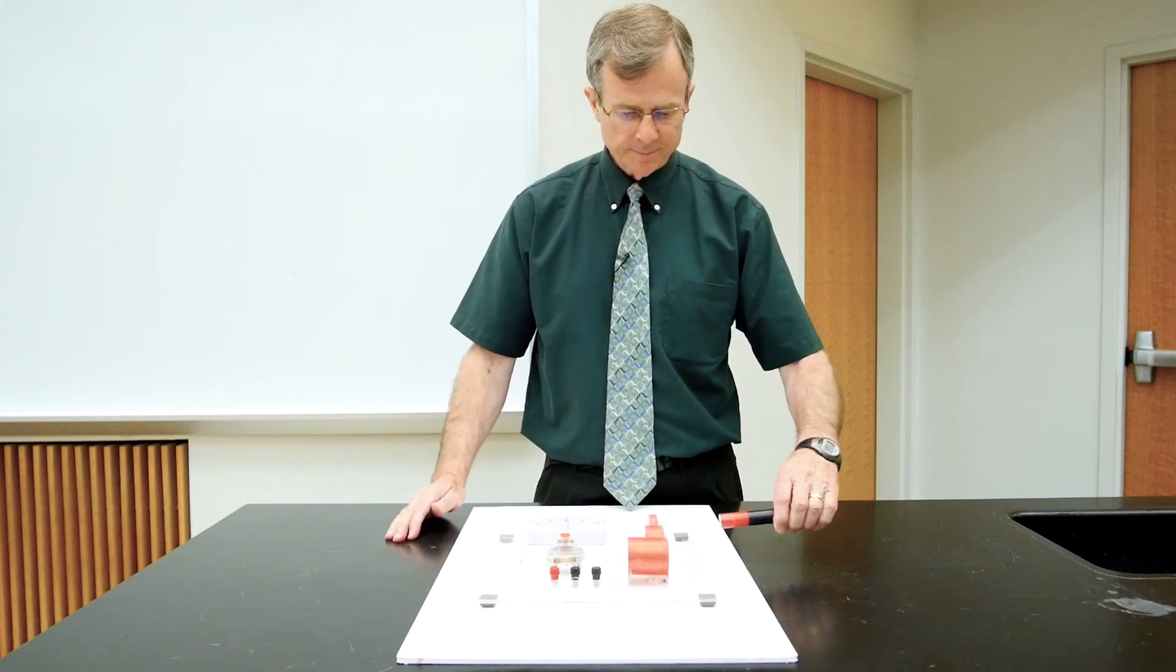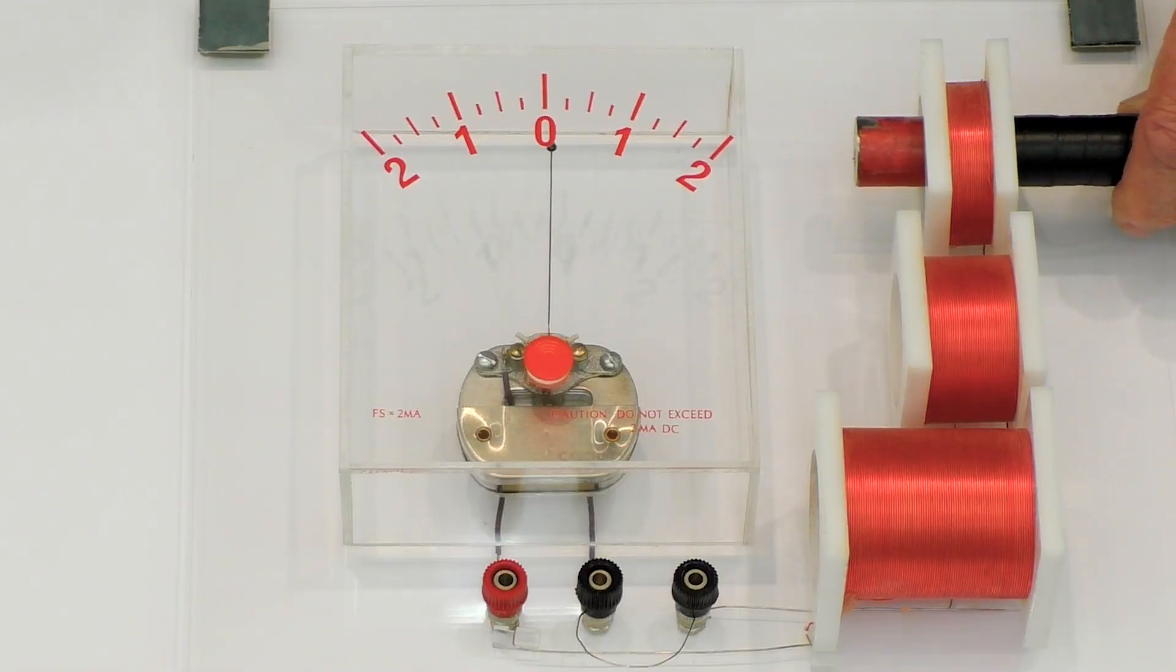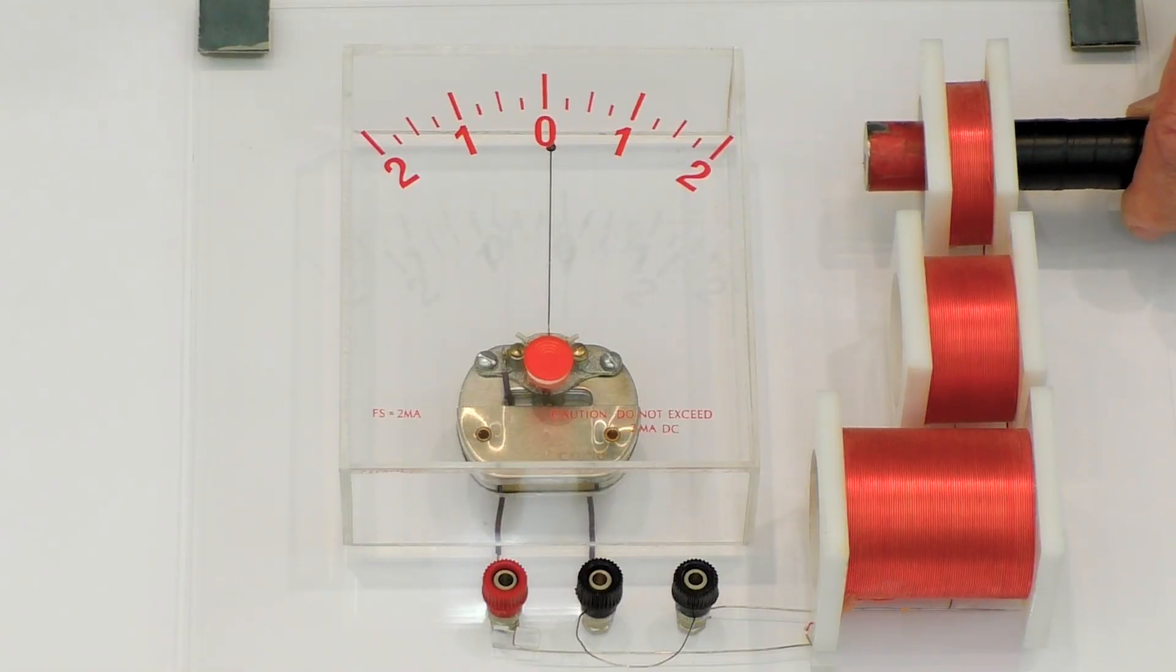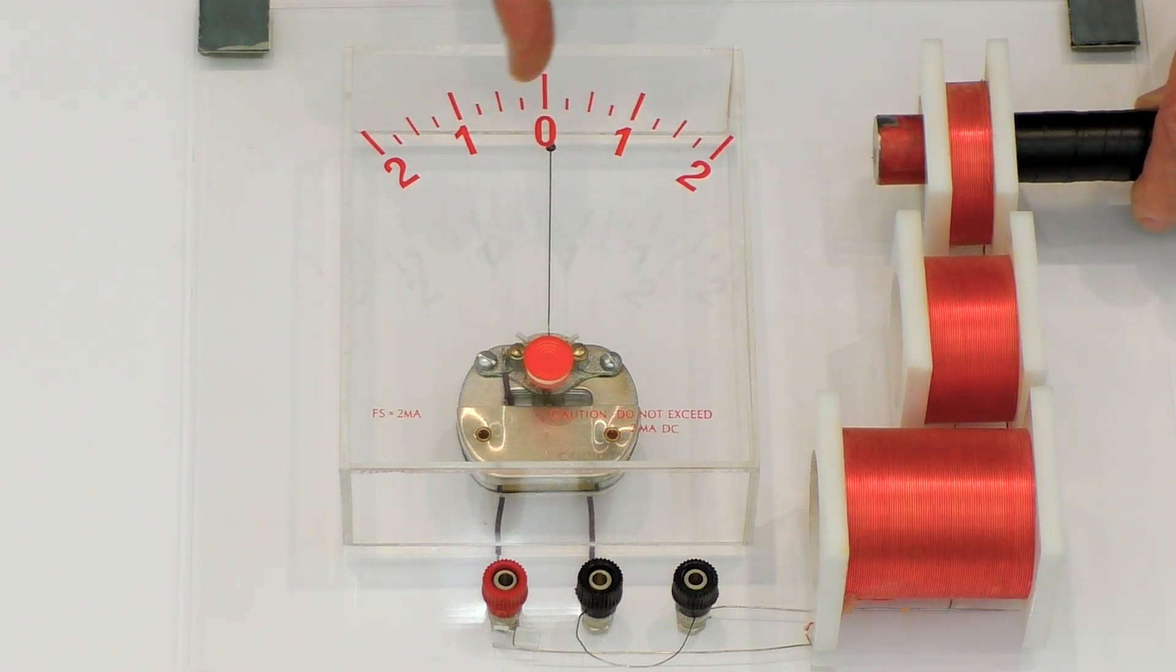So starting with the small one, if I move the magnet into the wire loop, you saw that as the magnet was moving into the wire loop, the needle bumped up positive. But now the needle isn't moving at all.